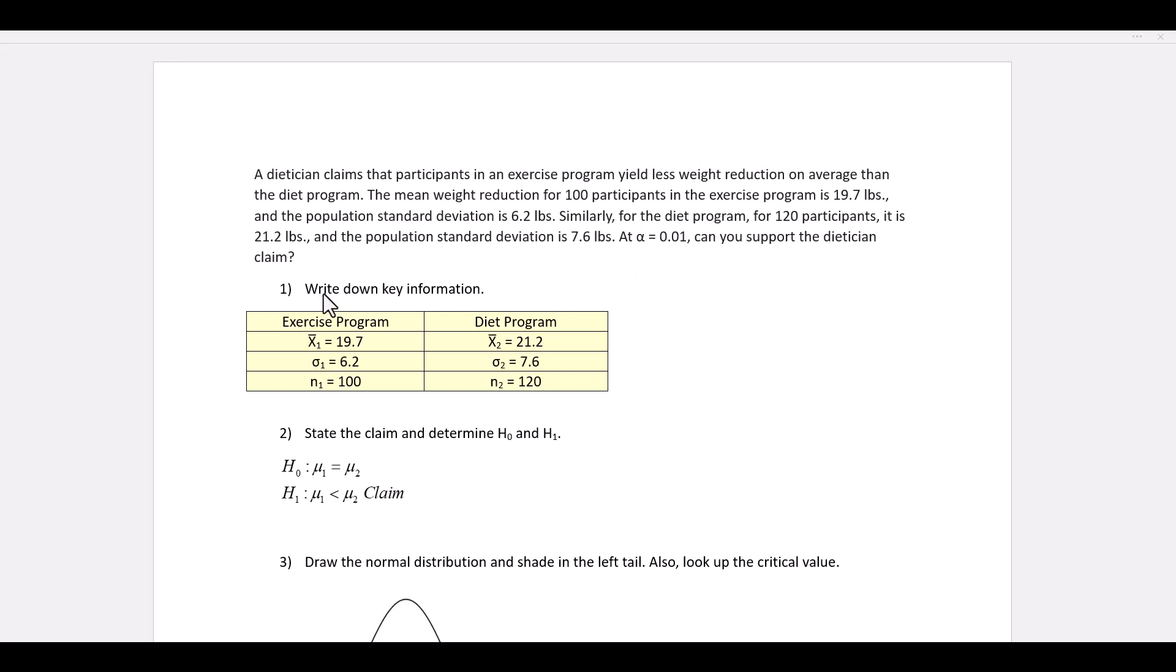The first step is we write down the key information. For the exercise program, the sample mean, X-bar sub 1, is 19.7. Sigma 1, the population standard deviation, is 6.2. N1, the sample size, is 100. For the diet program, X-bar sub 2 is 21.2, sigma 2, the population standard deviation, is 7.6, and N2 is 120.